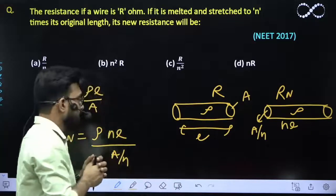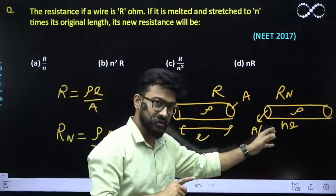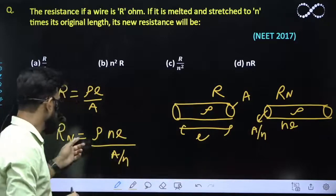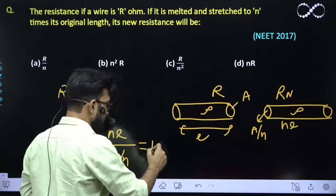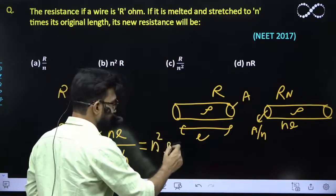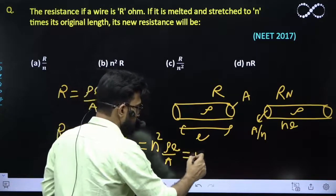Because these two would have similar volumes. So the new resistance is this, and n goes in the numerator, so it would become n²ρl/a, which is equal to n² times R.